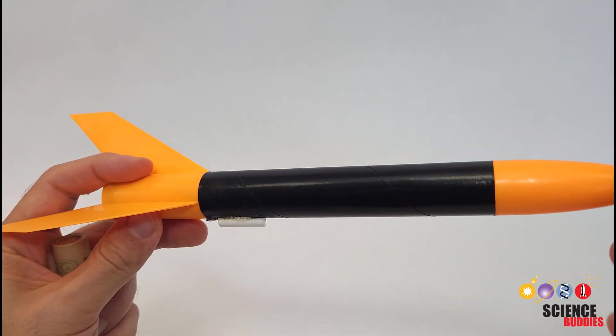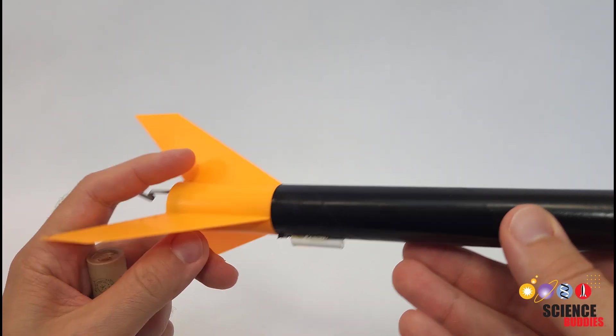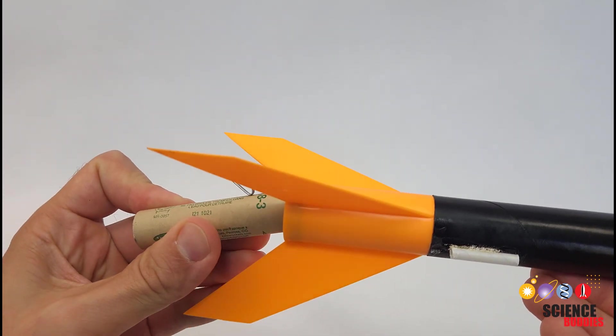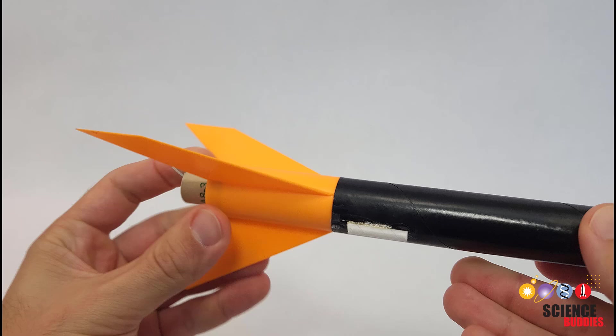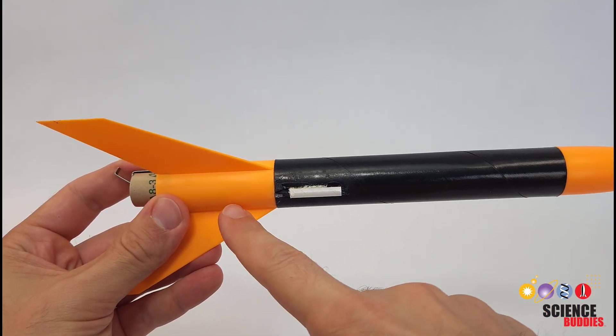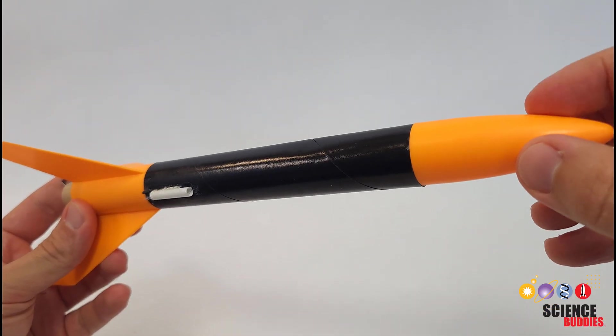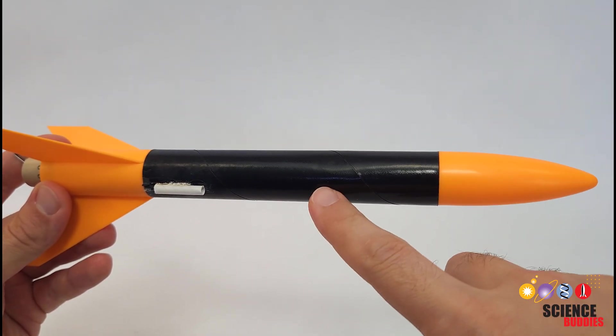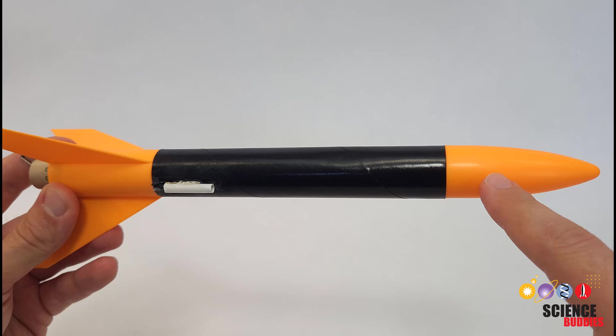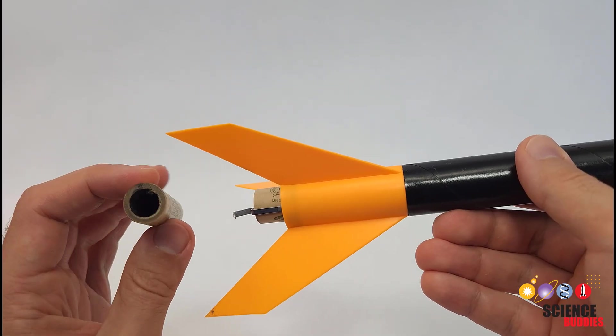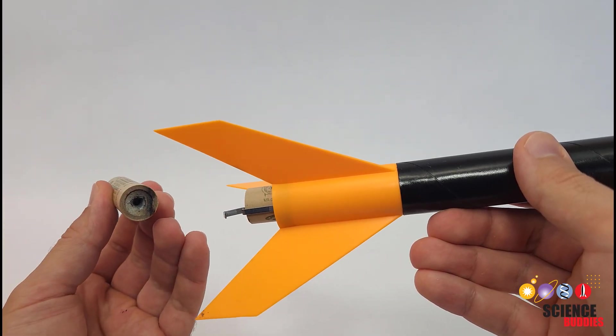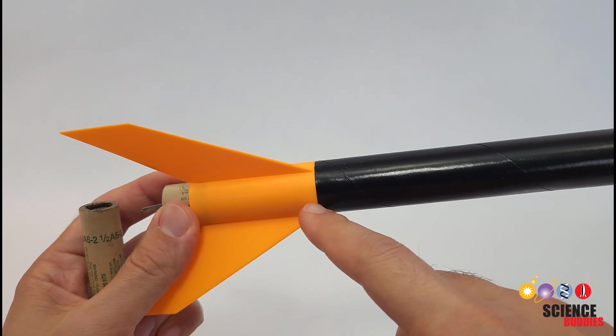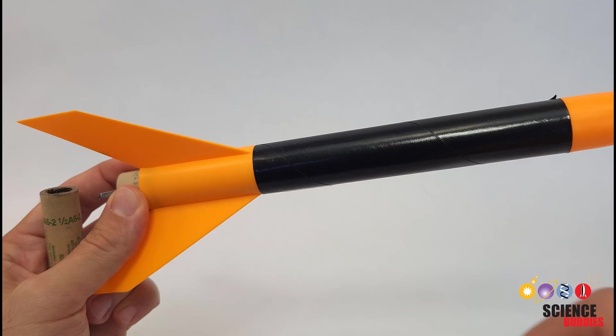How mass is distributed throughout the rocket affects the location of the center of mass. For example, model rocket engines are pretty heavy, so when you put one in towards the back of the rocket, that's going to shift the center of mass towards the back. Conversely, nose cones are usually hollow and pretty light, so if you pack some weight into the nose cone, that's going to shift the center of mass towards the front. Model rocket engines also expel propellant as they burn, meaning the engine gets lighter and the center of mass of the entire rocket shifts as the rocket flies.